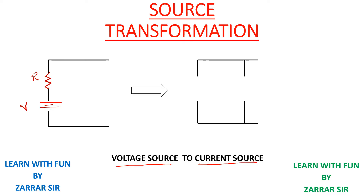Now if I want to convert a voltage source into a current source, I need to connect my resistance in parallel. So I'll connect the resistance in a parallel configuration — this is the resistance which is now parallel. I'm transforming my voltage source into a current source.